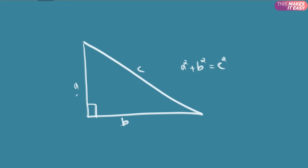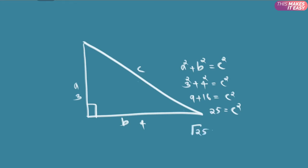For example, suppose a is 3 and b is 4. Then 3 squared plus 4 squared equals c squared. That means 9 plus 16 equals c squared, so 25 equals c squared. If c squared is 25, then c is the square root of 25, which is 5. So here c is 5.